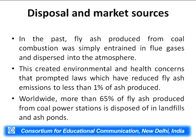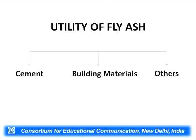Now we will have some discussion about its disposal and market sources. In the past, fly ash produced from coal combustion was simply entrained in the flue gases and dispersed into the atmosphere. This created very intense environmental health concerns, which prompted a law stating that at least 99 percent of the fly ash should not go to the atmosphere — only 1 percent is allowed. More than 99 percent of fly ash produced from coal power stations is now dispersed in landfills and ponds. As far as utilities are concerned, it has two major utilities: cement and building materials.